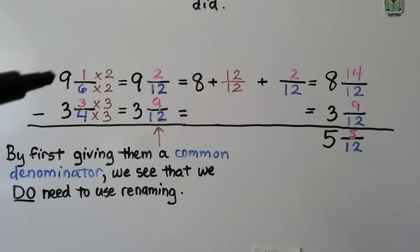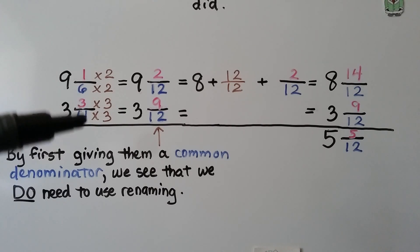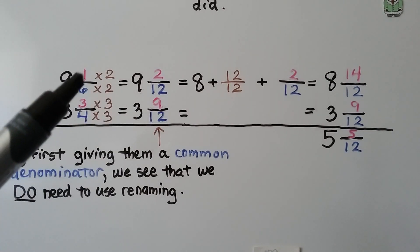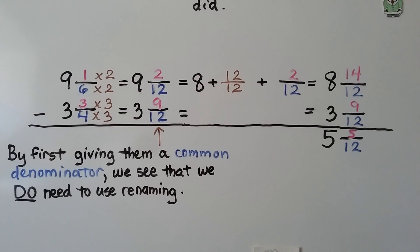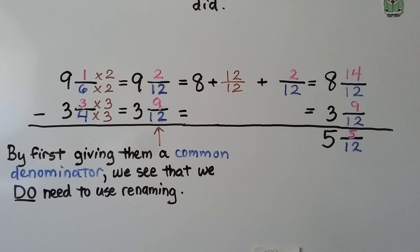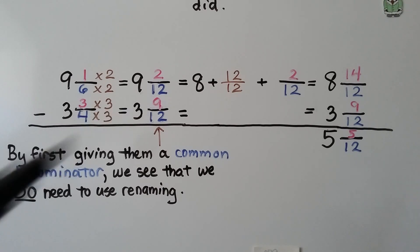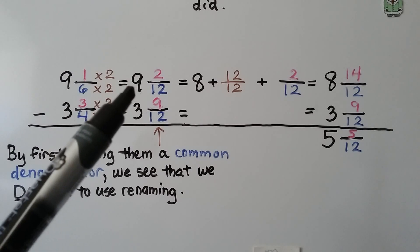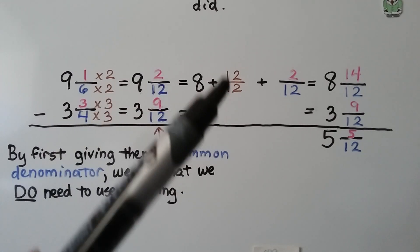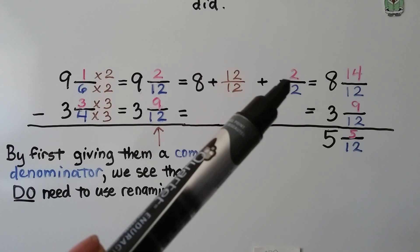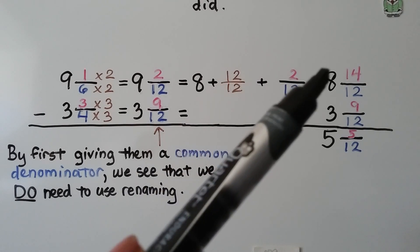Here we have 9 and 1 sixth minus 3 and 3 fourths. They have different denominators. Both 6 and 4 can meet at the multiple 12. 4 times 3 is 12, so 3 times 3 is 9. 6 times 2 is 12, so 1 times 2 is 2. We have 9 and 2 twelfths minus 3 and 9 twelfths. By first giving them a common denominator, we see that we do need to use renaming — this 2 numerator for the minuend is not great enough to subtract the 9 numerator from the subtrahend. We can take 1 away from 9 and make it an 8, and turn that 1 into 12 twelfths. We add the 12 twelfths and the 2 twelfths to get 14 twelfths, so we have 8 and 14 twelfths.